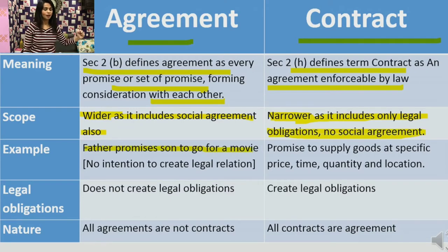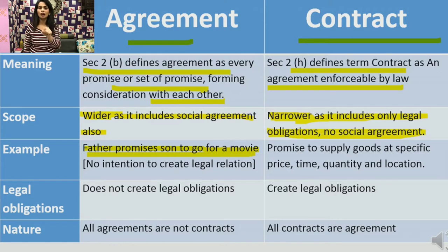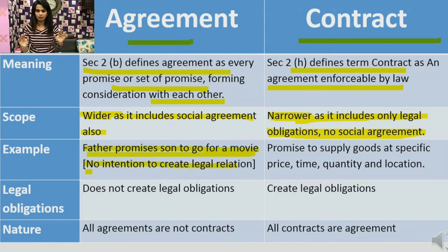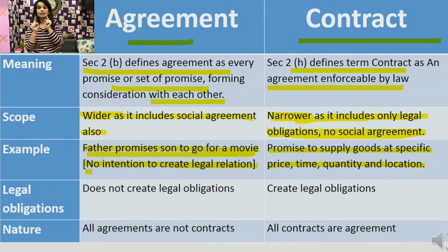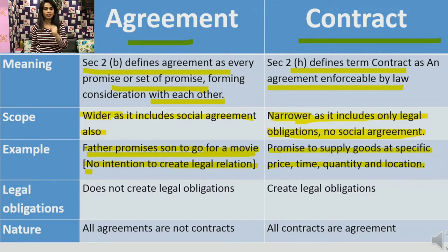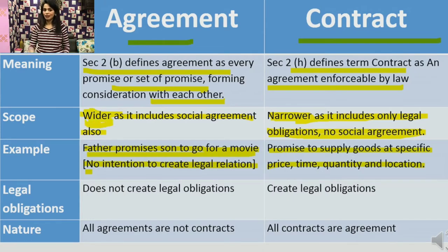A father promising his son to go for a movie on next Sunday is an agreement, but it is not a contract. Why? क्योंकि यहाँ पे legal relationship establish करने की कोई intention नहीं थी — there was no intention of the parties to establish a legal relationship. लेकिन when I promise that I will supply you this many tons of wheat or rice on this date at a particular price, then this is a contract, because अगर मैं supply नहीं करती हूँ, तो सामने वाली party has a right to go to court and sue me for not fulfilling my contract. So agreement is a wider term because it includes social agreement also, and contract is a narrower term because it does not include social agreement.